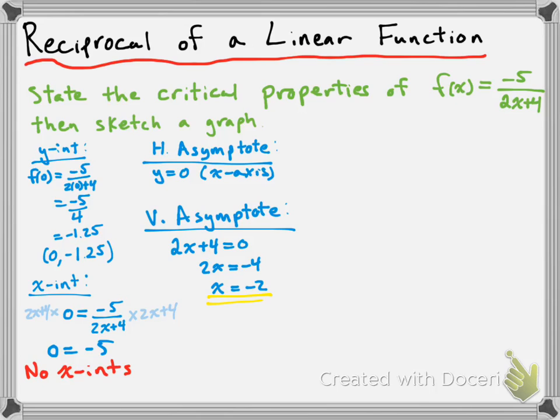So this is most of the information we need to sketch this. I'm going to start by plotting the y-intercept at -1.25, approximately there. Next, let's plot the vertical asymptote at x = -2 — I'll place a pale pink line there. The vertical asymptote separates the function into a couple of pieces: stuff to the right and stuff to the left.